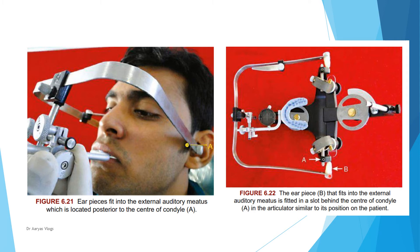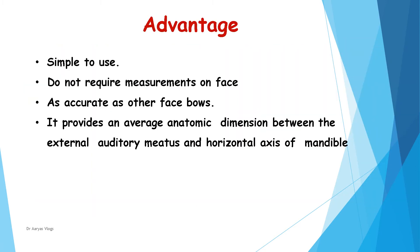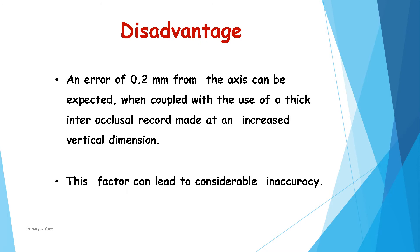This type of facebow is easier to manipulate clinically. An example is the Hano spring bow. Its advantages are: it is simple to use, does not require any measurements on the face, and provides an average anatomic dimension between the external auditory meatus and the horizontal axis of the mandible. The disadvantage is that an error of 0.2 mm from the axis can be expected, which when coupled with the use of thick interocclusal record made at an increased vertical dimension, can lead to considerable inaccuracy.